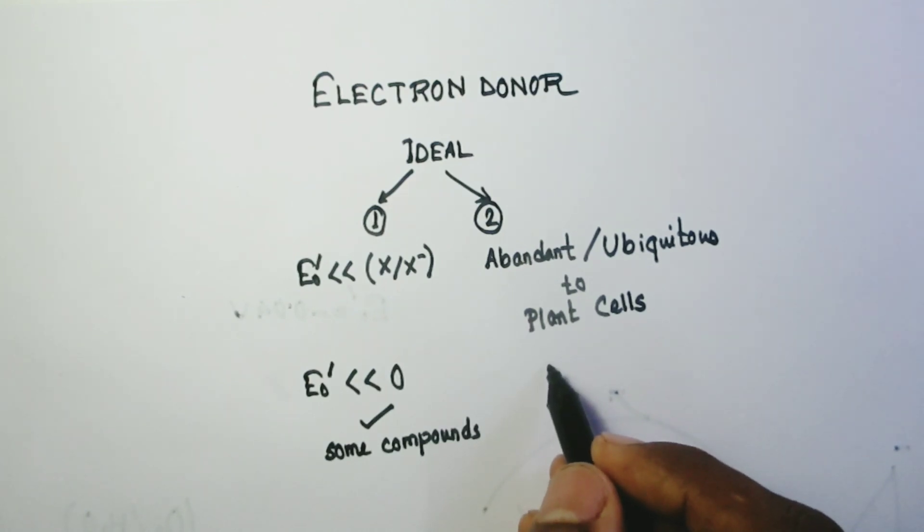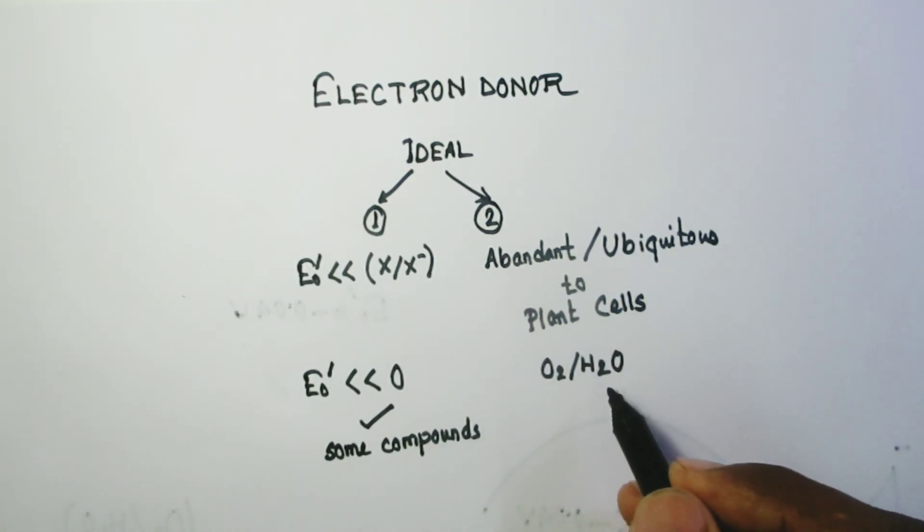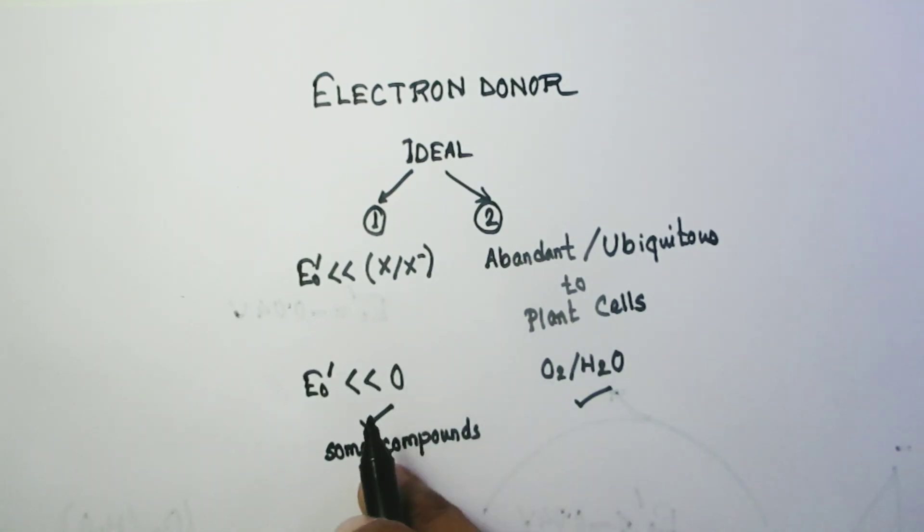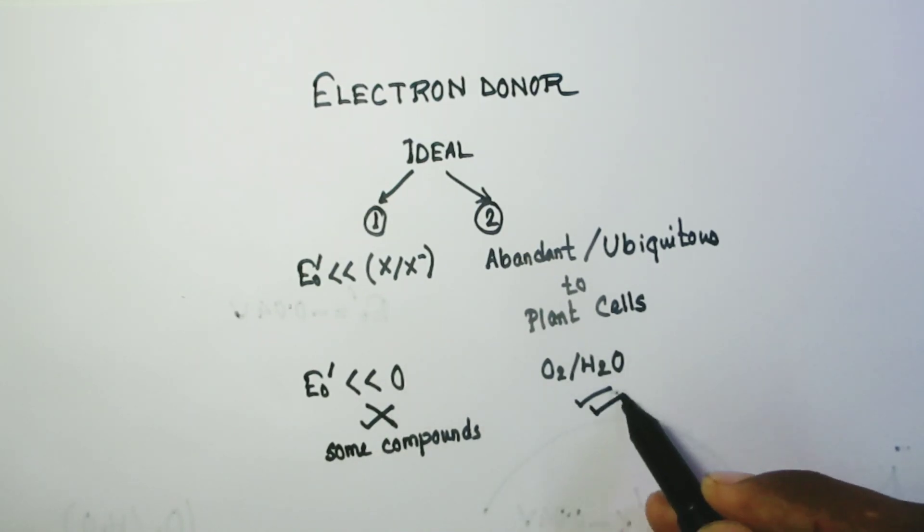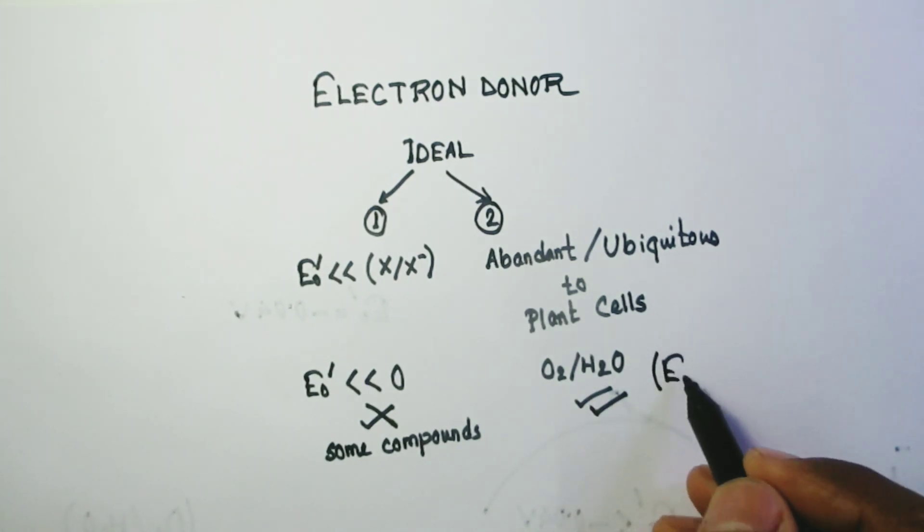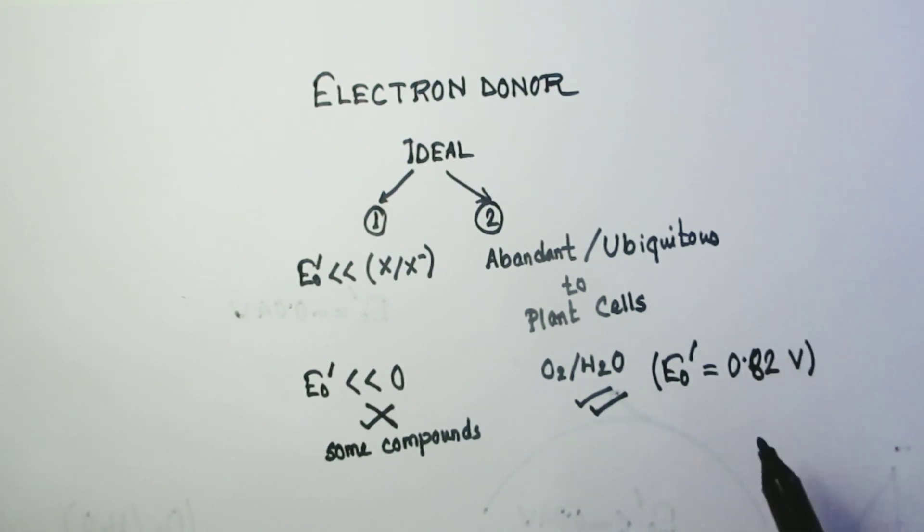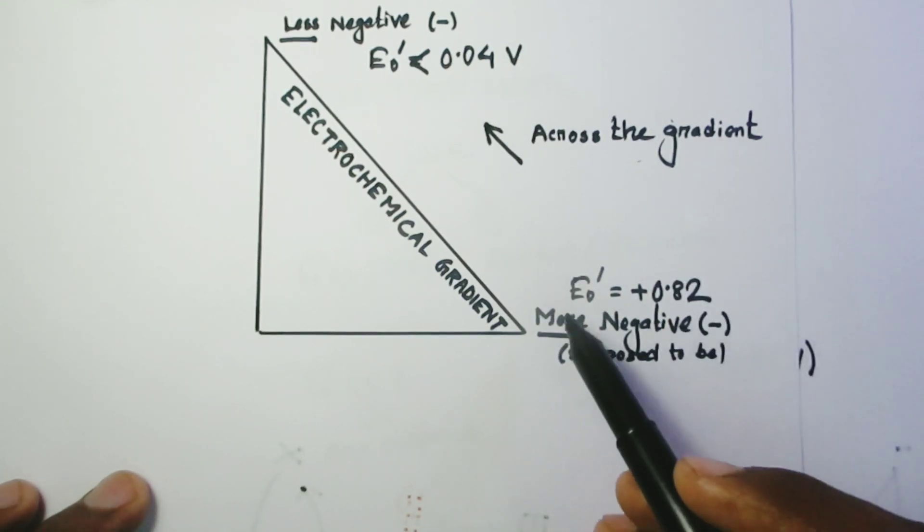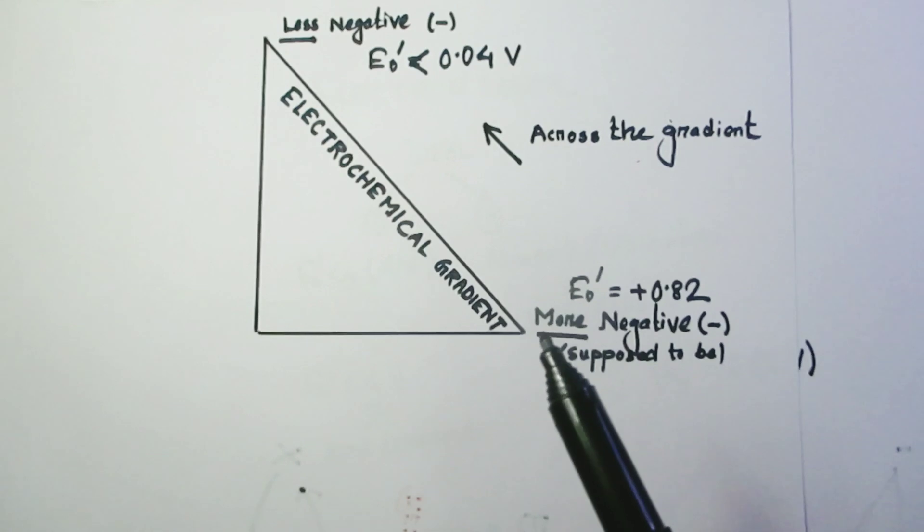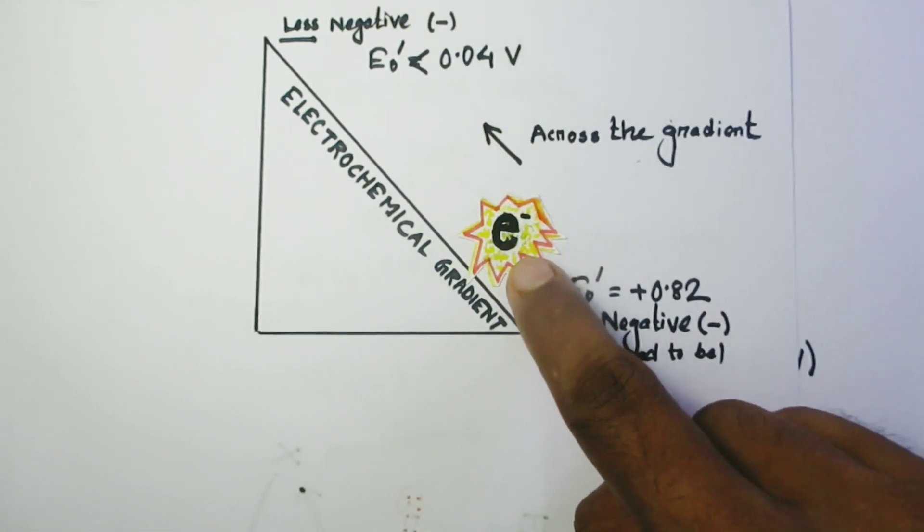If plant goes for the E0 prime value, then it doesn't have that much of compounds. But if plant goes for the ubiquitous medium like O2 H2O system, it faces the difficulty of E0 prime value of positive 1, that is positive 0.82 volt. Just see where the problem lies. This is the electrochemical gradient where the electron should travel from less negative to more negative side along electrochemical gradient, but it is happening the opposite. Electron is traveling 0.82 to minus 0.04 and in order to do that, it needs energy. And that is why energy is required in photosynthesis to propel this electron.